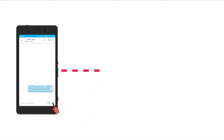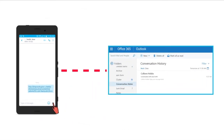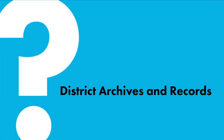Note that all of your Skype messages will be saved in the conversation folder under your Outlook inbox for 30 days. These messages are discoverable, and your use of Skype for Business should abide by the district's network use agreement. Questions? Contact District Archives and Records for assistance at 206-252-0796 or archives@seattleschools.org.